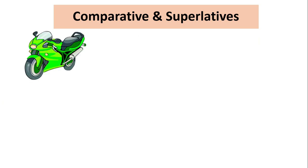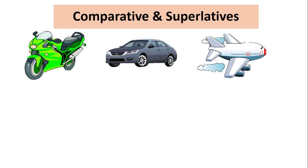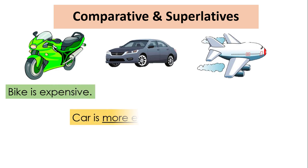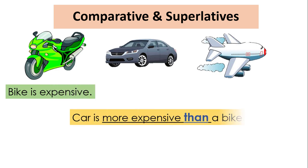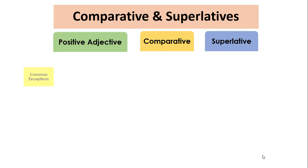Now let's compare a bike, a car, and a plane using the word 'expensive'. Bike is expensive. A car is more expensive than a bike. And the plane is the most expensive.